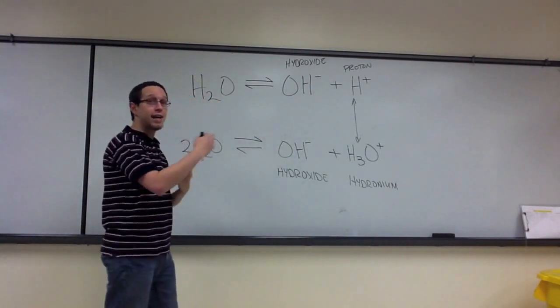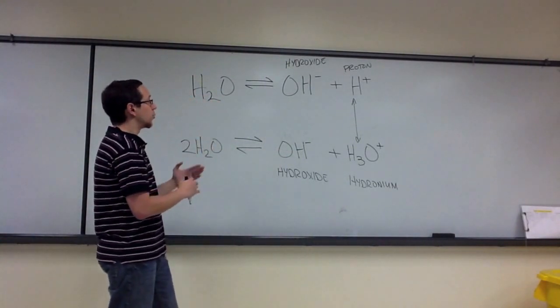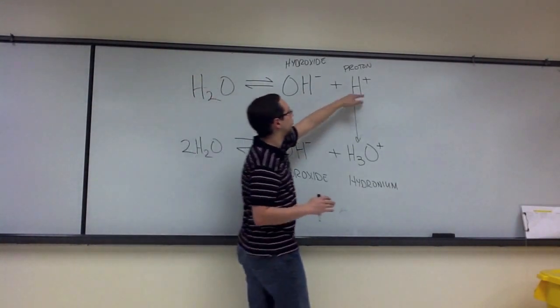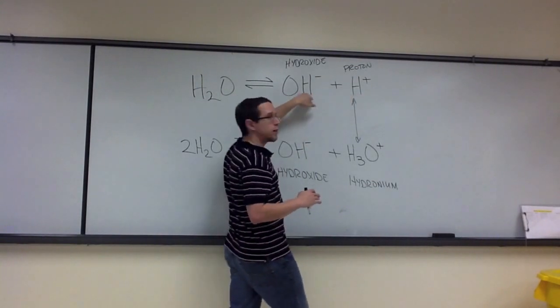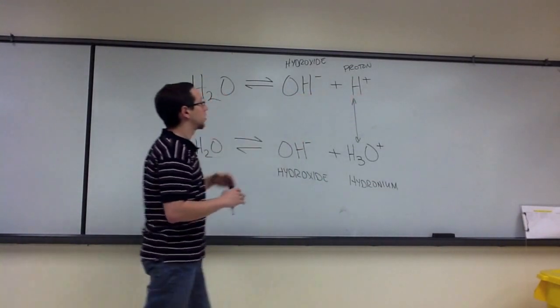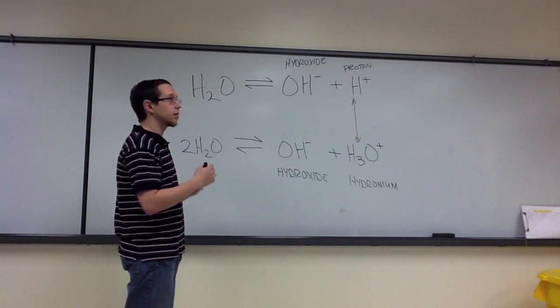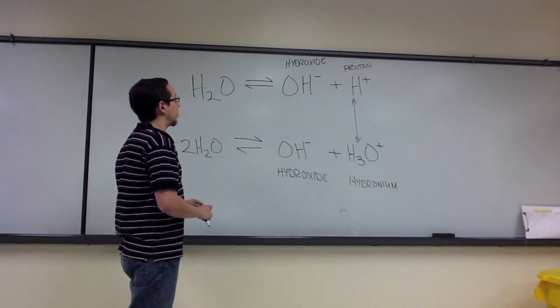So if we add an acid or we add a base, we're going to change the relative concentration of one of these two components. And in doing that, we're going to alter what's known as either the pH or the pOH.